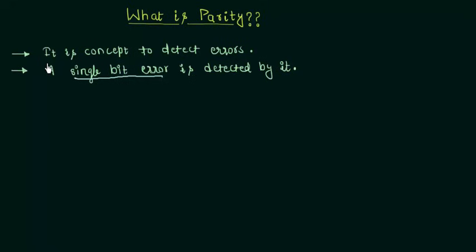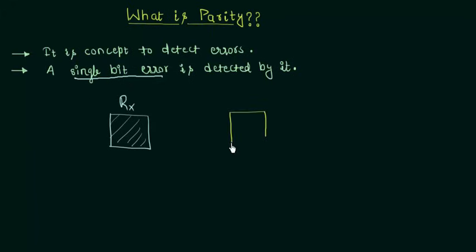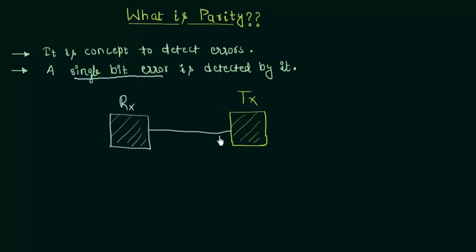Now I will explain these two things quickly. Let's say this is our receiver's end — the blue one is our receiver end Rx, and the yellow one is our transmitter end. A signal is transmitted from the transmitter to the receiver. A signal is transmitted through this channel from the transmitter and then received by the receiver.